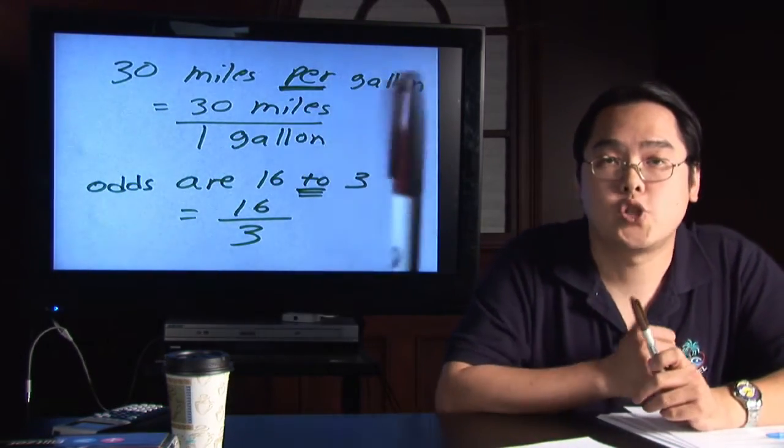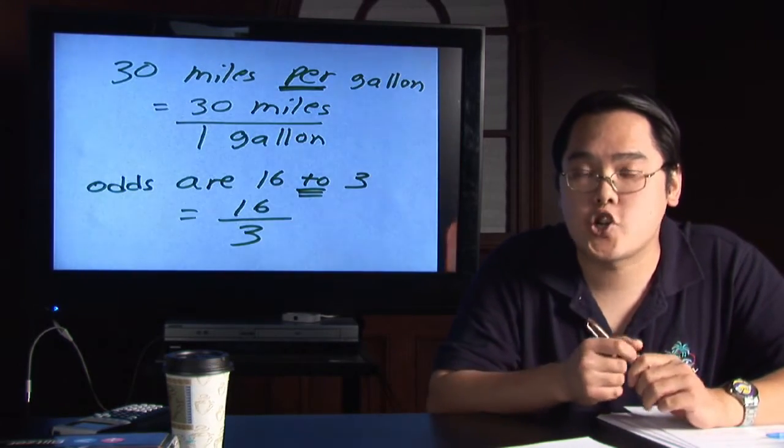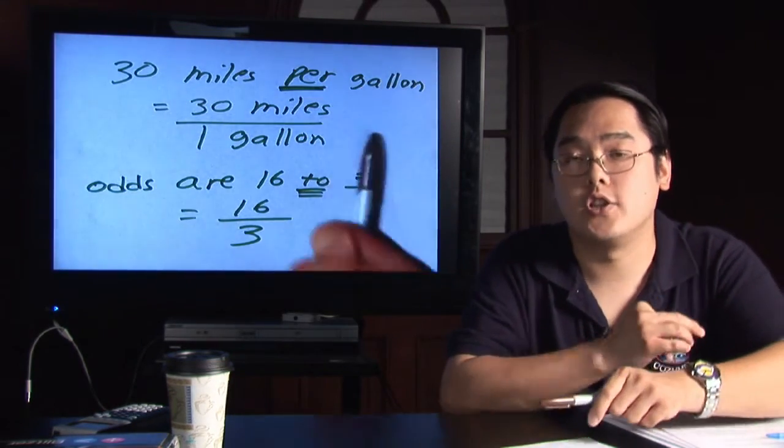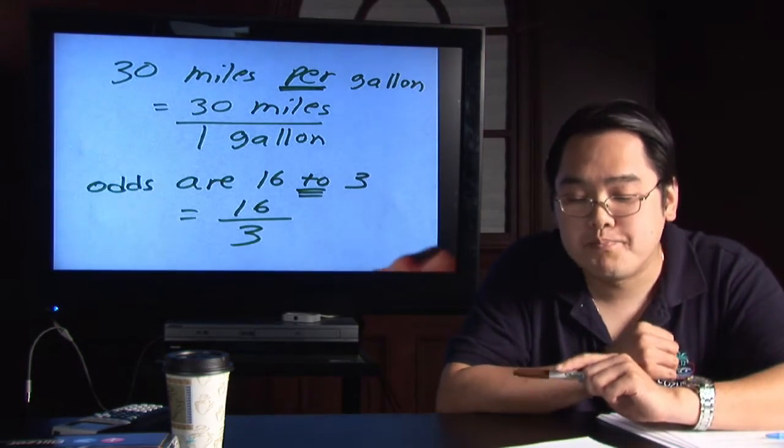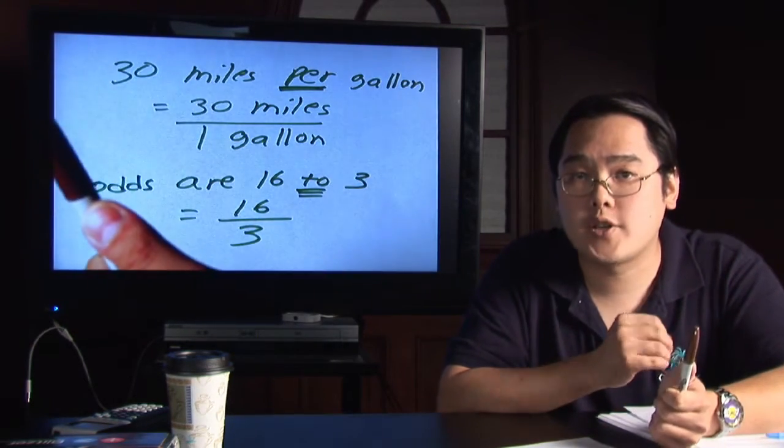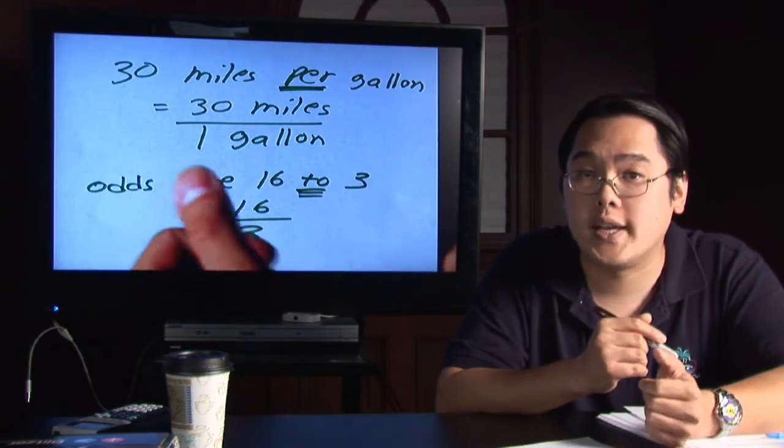Now, the other example is the word to. To has the same function as the word per. The to tells you what number goes on top, what numbers go on the bottom. One practical use of it is calculating odds.